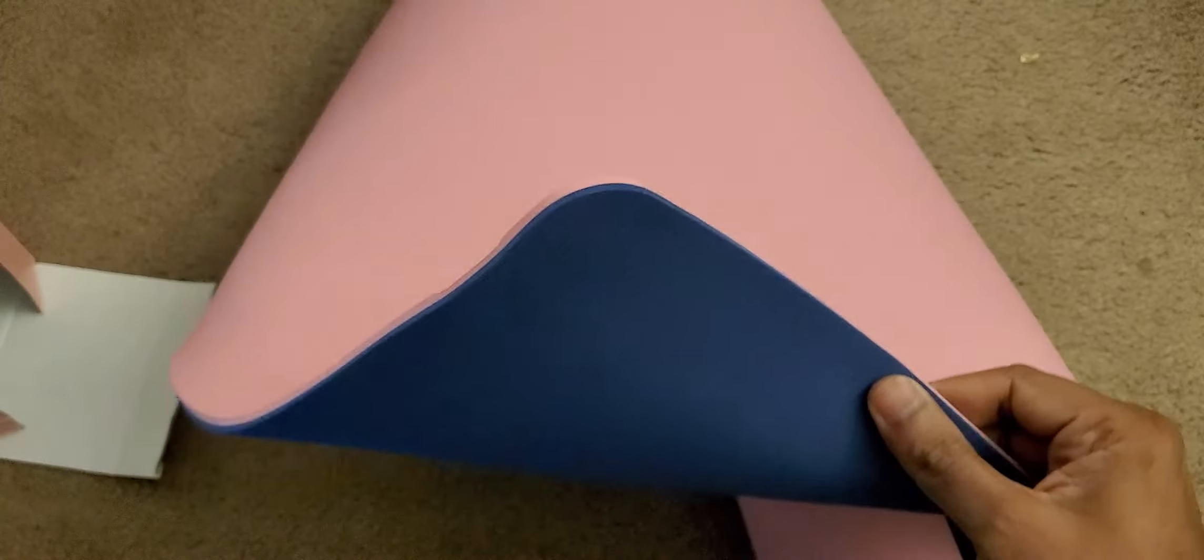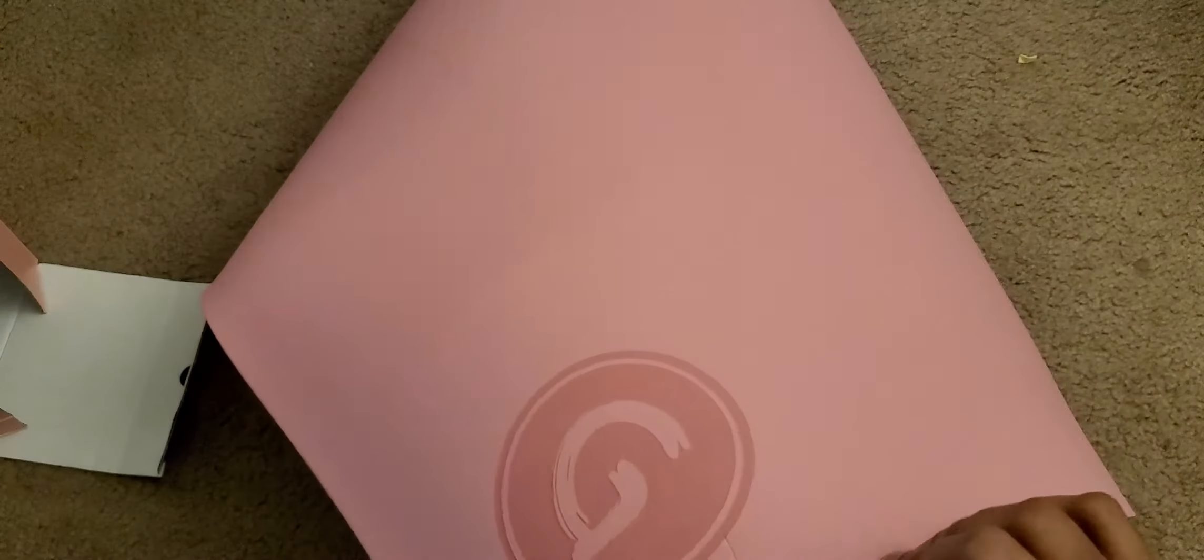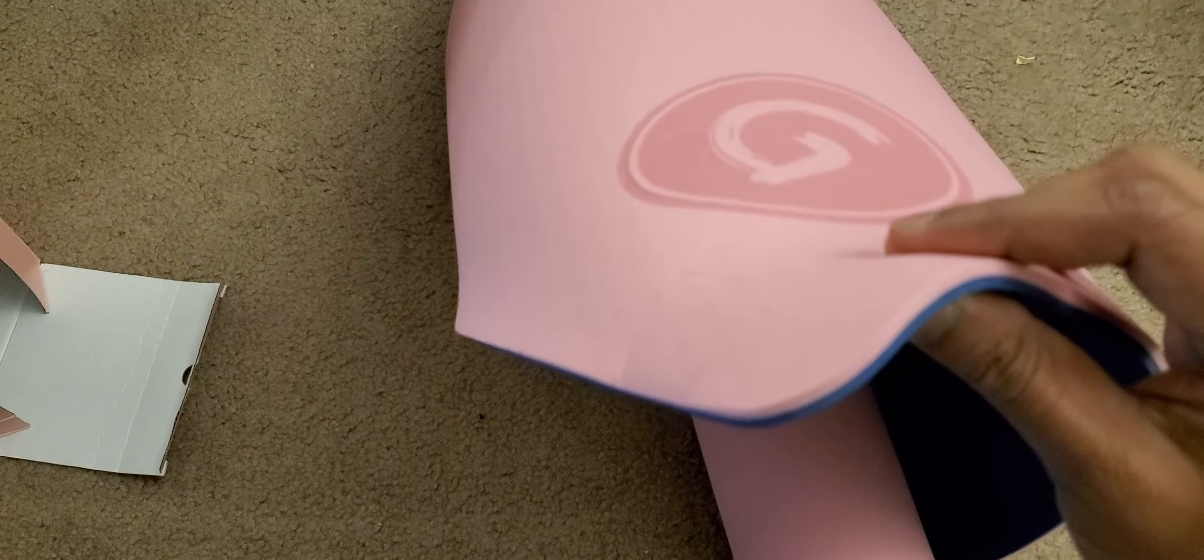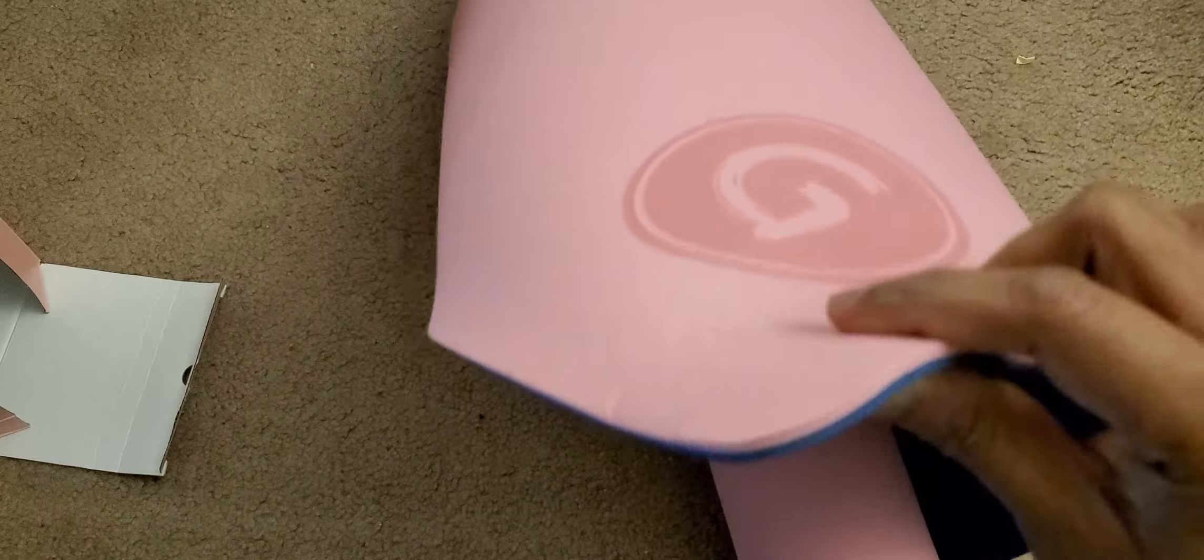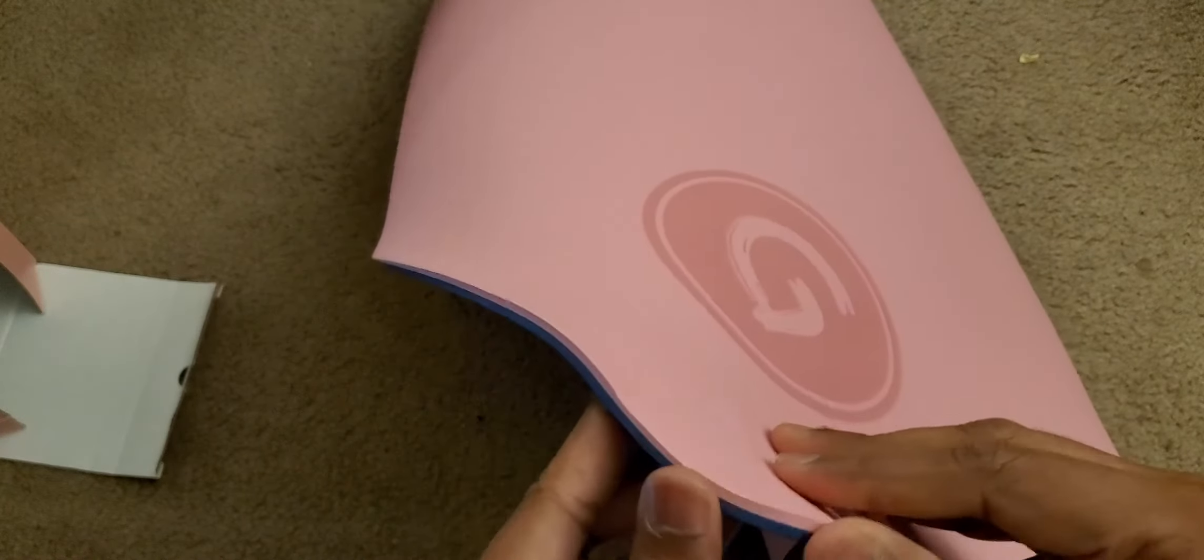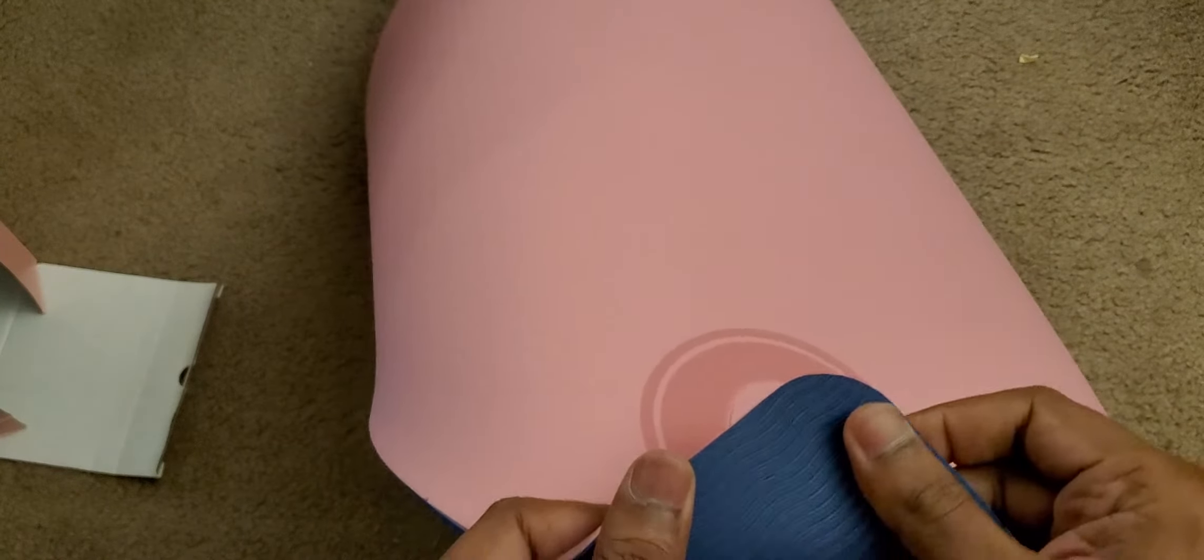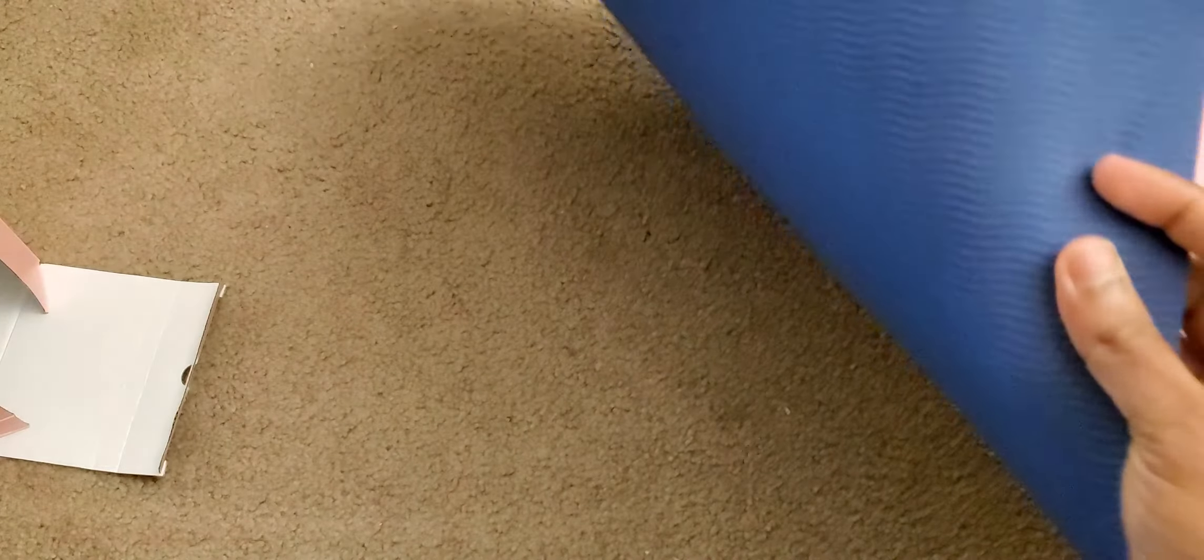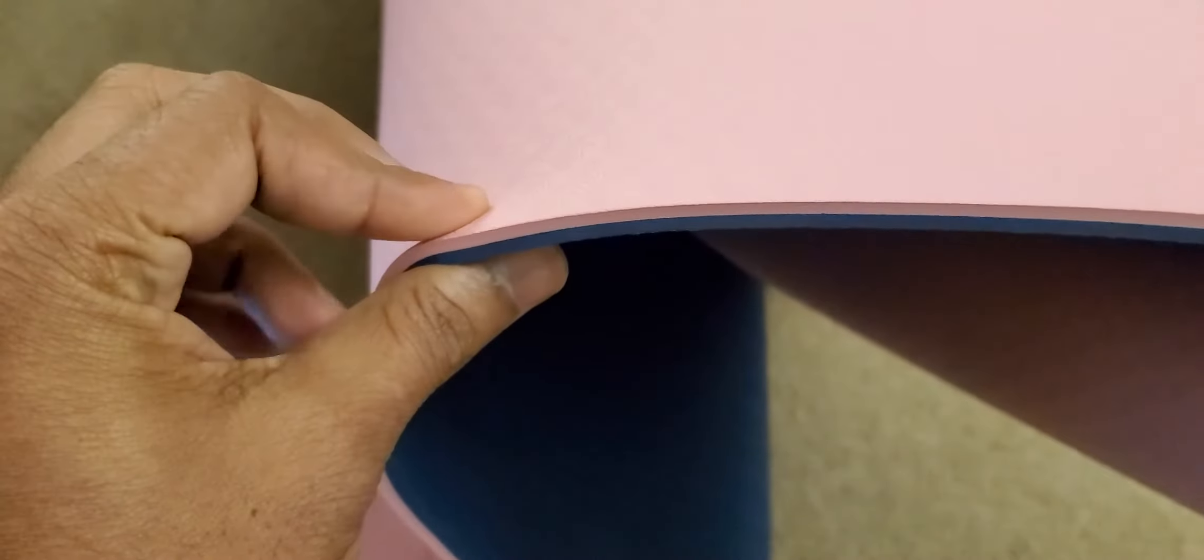You can see the 6mm width and there are two surfaces here - the back side and the surface. The back side surface is a non-slip surface; it looks like it's going to stick with the surface. You have to use it by putting the non-slip surface towards the floor, and you can see it's very soft.